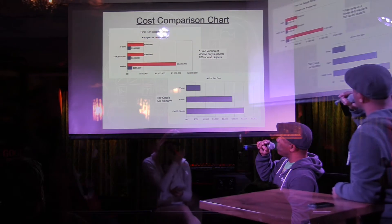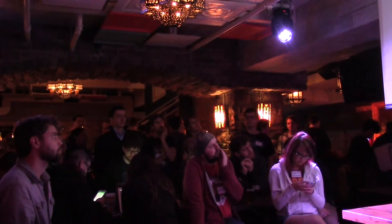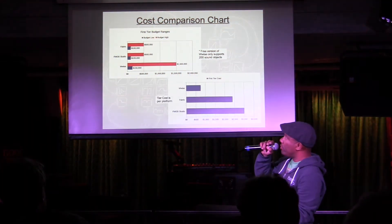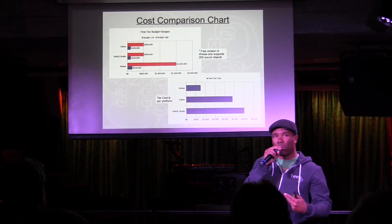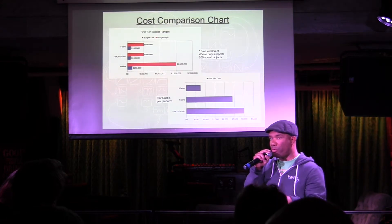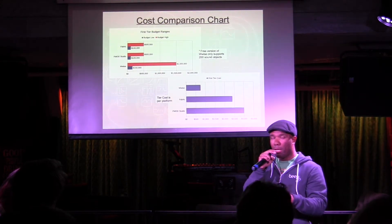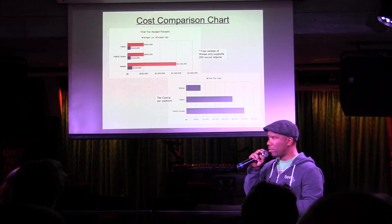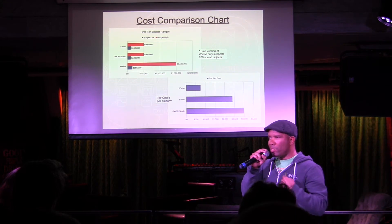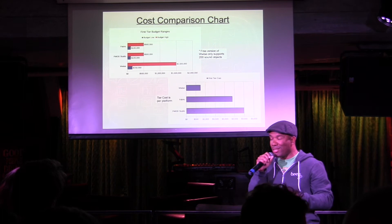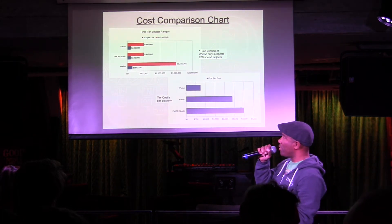As far as hitting the free tier for Wwise, that means using fewer than 200 audio assets. For FMOD Studio and Fabric, if your total budget is less than $100,000 for the game itself, then you get to use it for free. So once again, there's no reason not to use game audio middleware — it'll save you a lot of time and a lot of headache. They've been working on this stuff for a long time and they've been doing a good job on it.